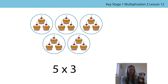We've got one three, two threes, three threes, four threes, five threes. Well done, Bunga — you were correct. There are five threes, and we can write this as five times three. Pause the video and explain to somebody at home what each number in the multiplication expression represents.